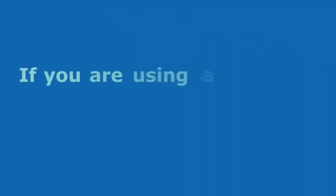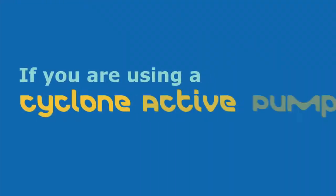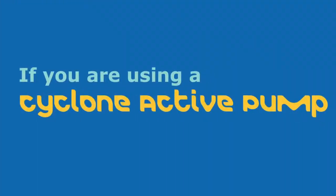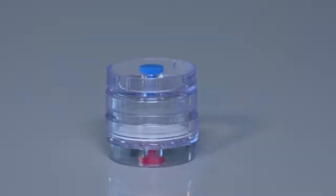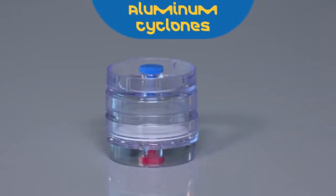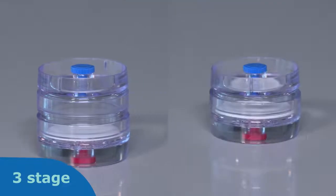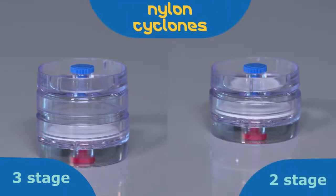Additionally, if you are using a cyclone active pump, it must be noted that the aluminum cyclones can only be used with three-stage cassettes, while niline cyclones are compatible with either two or three pieces.